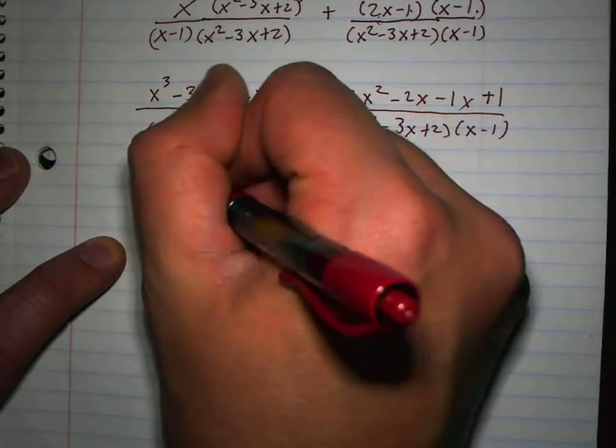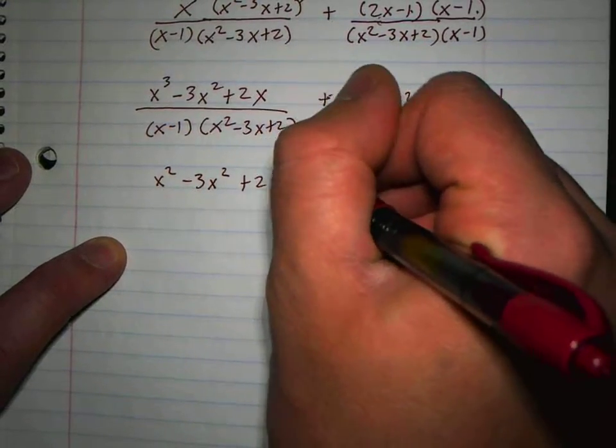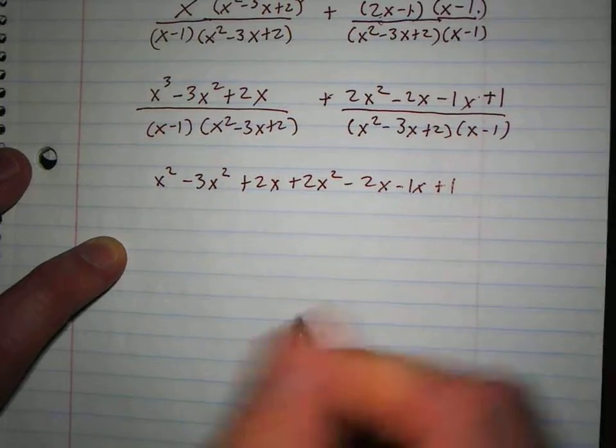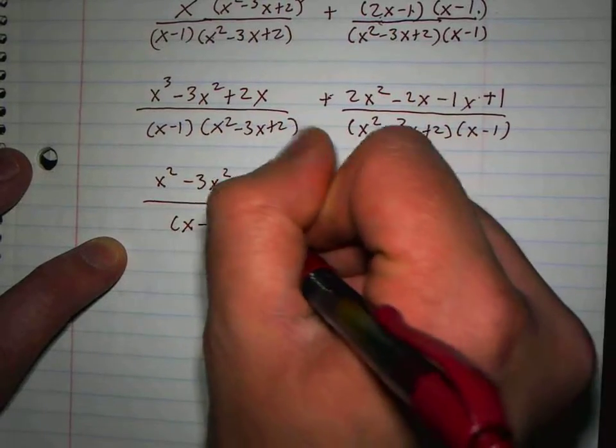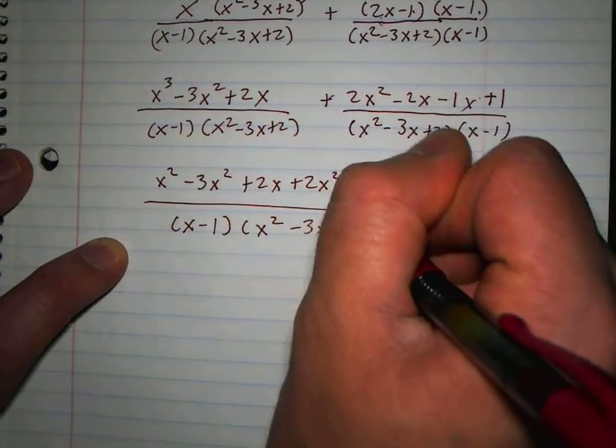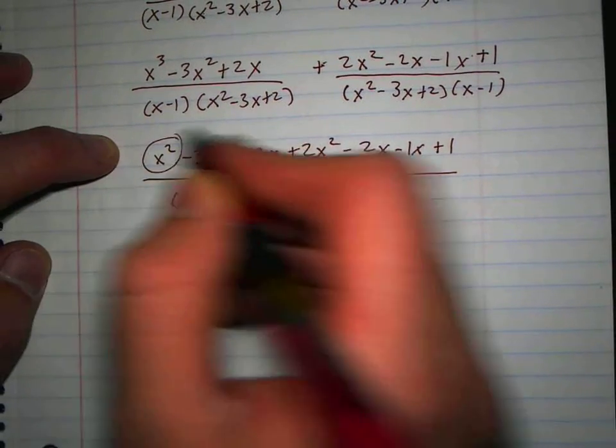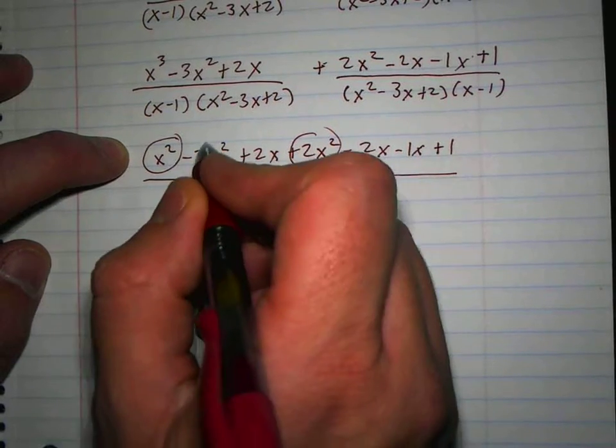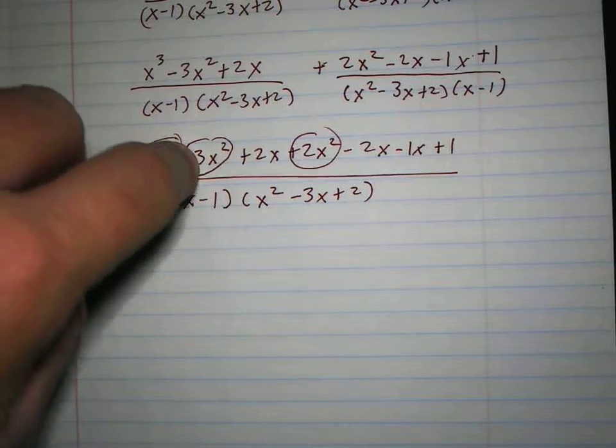So I get x squared minus 3x squared plus 2x, and that's a plus of all these. Then I get x squared. I always like to start with my x squared. I have x squared and 2x squared, which makes how many x squareds? 3x squareds. But then I have this one that's negative 3x squareds, so all my x squareds is gone because 1 minus 3 plus 2 is 0.